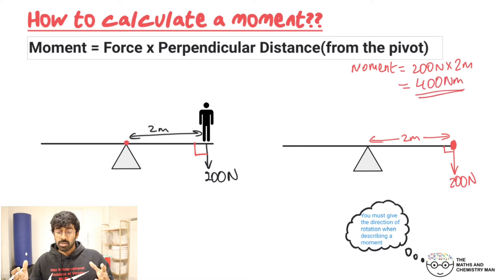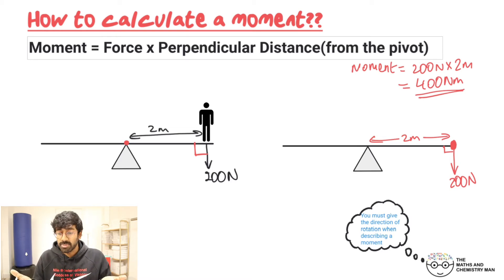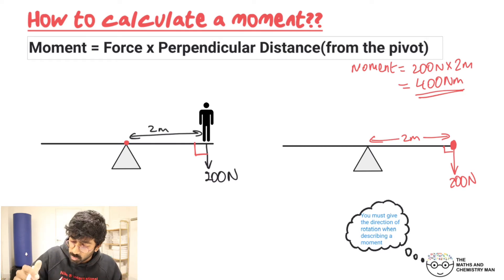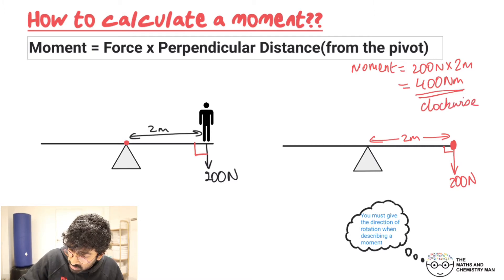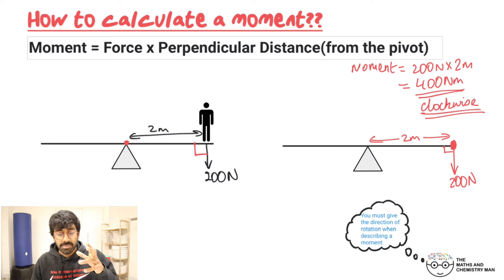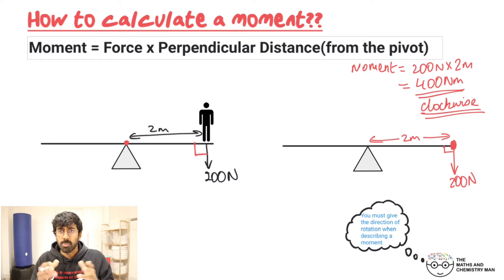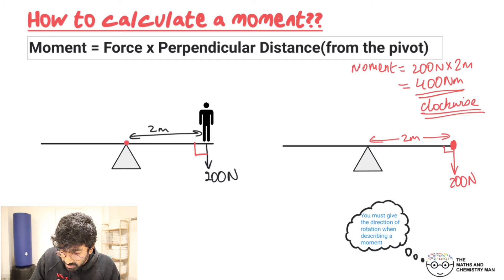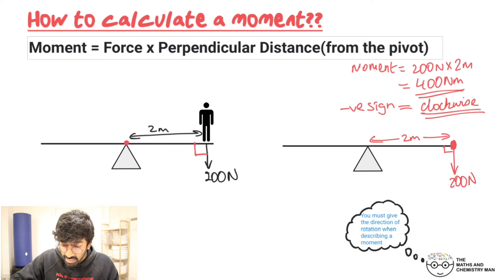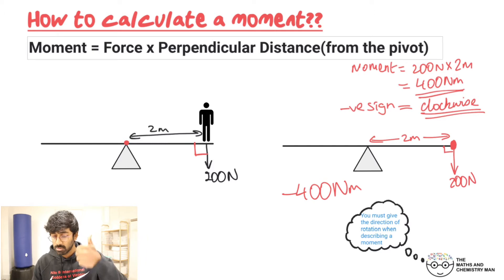We always need to give a direction. So which way is it turning? We can tell this is going to be in the clockwise direction — 400 newton meters clockwise. In some textbooks they'll give you a sign instead of saying clockwise or anti-clockwise: the clockwise direction in maths is given a negative sign. So a negative sign equals clockwise, and you may just see this as minus 400 newton meters.